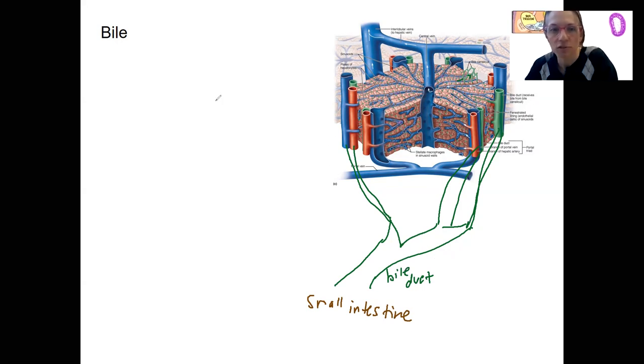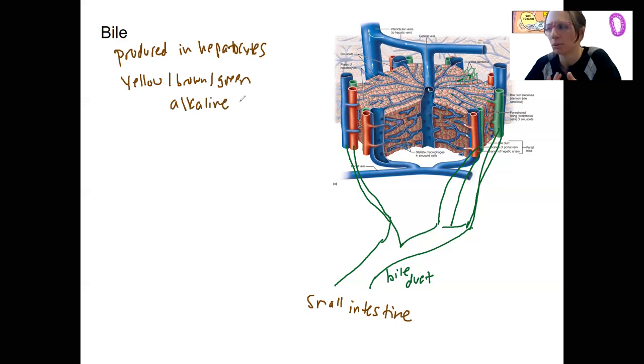This is a great color here for talking about bile. So, produced in hepatocytes, what is it? It is a yellowish-brown-green alkaline solution. It actually is in water. It's going to have bile salts - that's an important one.